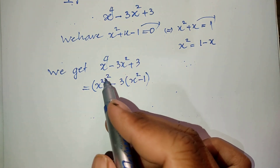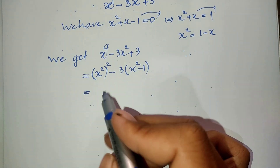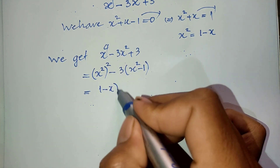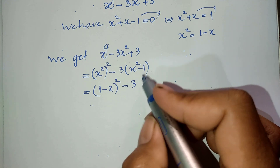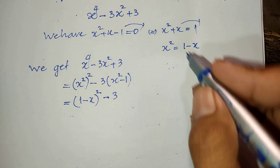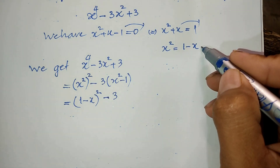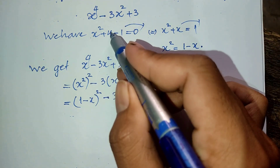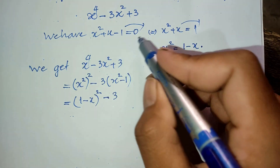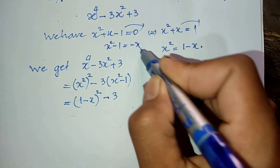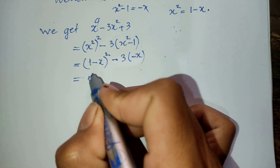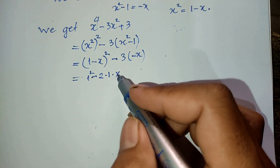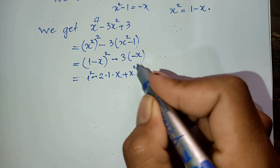Now x squared equals 1 minus x, so we replace x squared with 1 minus x. We get x squared times x squared equals 1 minus x squared, which equals 1 minus 2x plus x squared. And x squared minus 1 equals negative x, so minus 3 times x squared minus 1 equals minus 3 times negative x equals plus 3x.